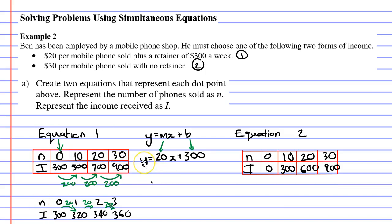You might remember that we need to change the y and the x. And if we look at our table, usually x is in the top row. This time it's n. So we're going to replace the x with the pronumeral n. So it becomes 20n plus 300. And usually y is the bottom row, but this time it's i for income. So we're going to replace the y with an i. And that's our new equation for equation one.